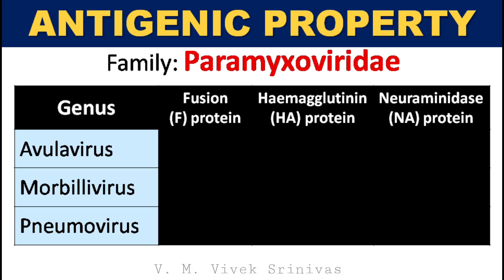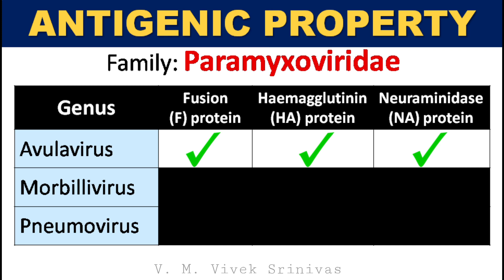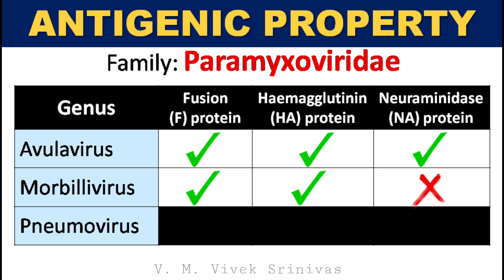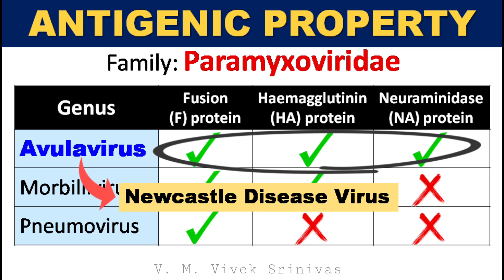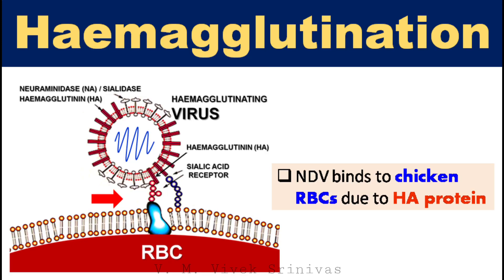Antigenic property. Among viruses under the family Paramyxoviridae, the genus Avulavirus possesses all three proteins: fusion protein, hemagglutinin, and neuraminidase. The genus Morbillivirus possesses two proteins: fusion protein and hemagglutinin. But Pneumovirus possesses only fusion protein. So Newcastle disease virus, which is under the genus Avulavirus, possesses all three proteins.